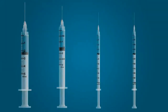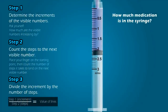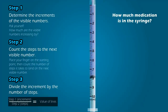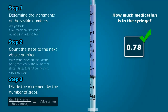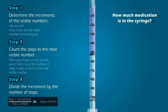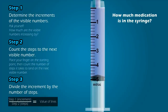We went through all of the syringes, but before I end this lesson, I want to test your skills with a few random syringes. Once the syringe appears on your screen, press pause to figure out the answer and then press play when you're ready to view the answer. Let's begin. How much medication is in this 3 milliliter syringe? How much medication is in this 1 milliliter syringe? How much medication is in this U100 syringe? And how much medication is in this 5 milliliter syringe? So did you answer all of them correctly? Great job!